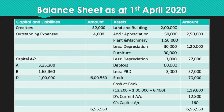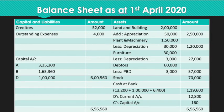Liability side: Creditors 52,000; Outstanding contingent liability 4,000; Capital accounts — A: 3,35,200; B: 1,65,360; D: 1,00,000. Total liabilities: 6,56,560. The balance sheet balances perfectly.